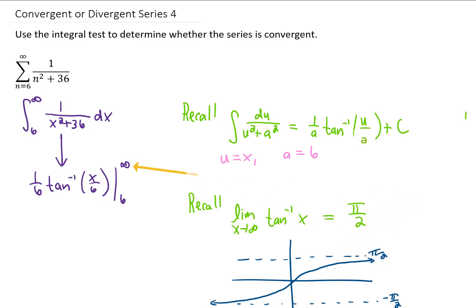So if we plug in our upper limit of integration, we take the limit as the inverse tangent goes to infinity. That gives us 1 sixth times pi over 2. And if we plug in our lower limit of integration, we get the inverse tangent of 1.